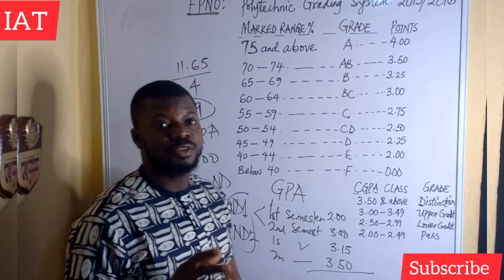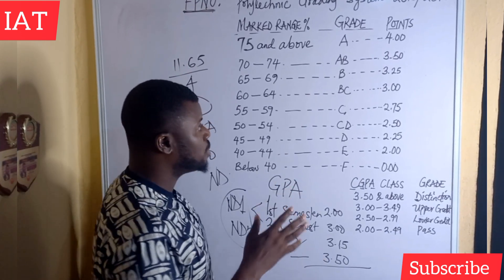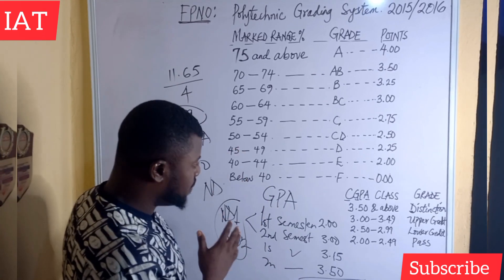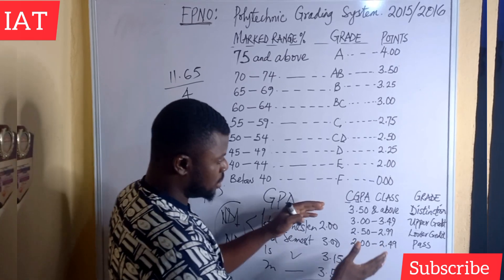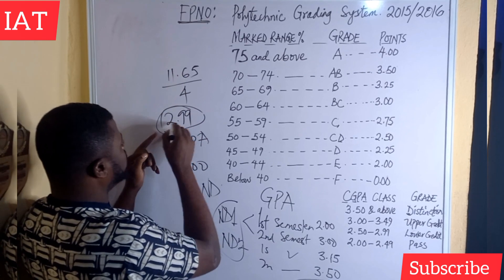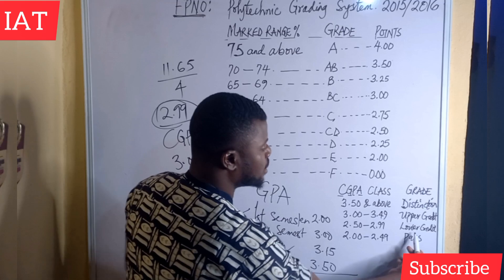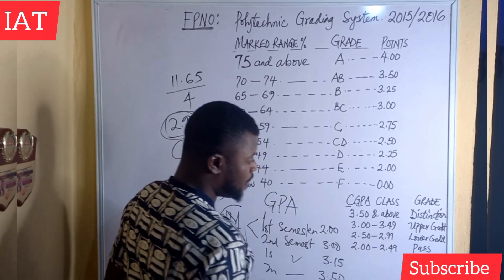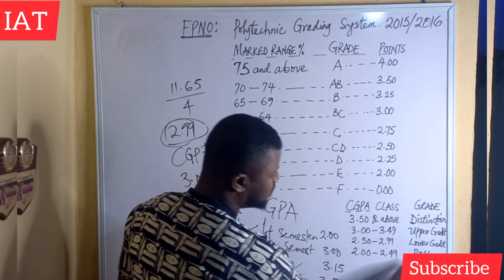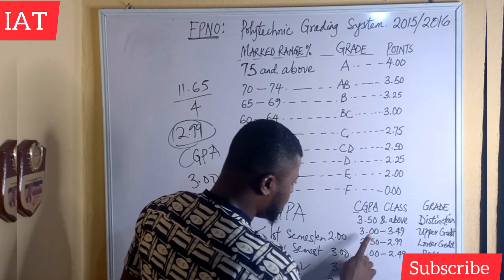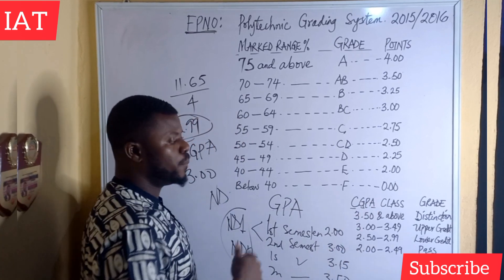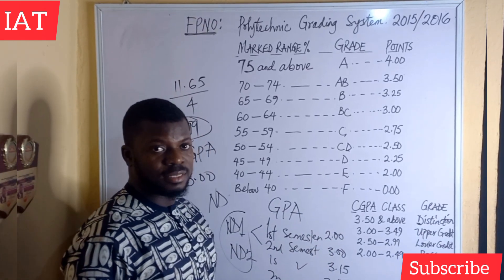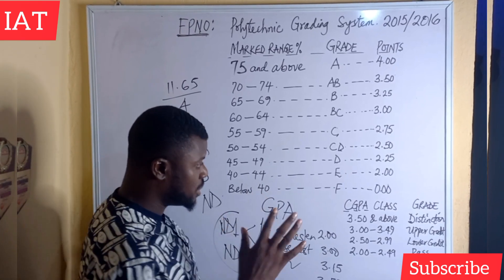If your CGPA is 2.99, check the grade — 2.50 to 2.99 is lower credit, so your result will be written as lower credit. If the total CGPA falls within 2.00 to 2.19, it means you just have a pass. But if it falls within 3.50 and above — say 3.50, 3.70, 3.80, or 4.00 — that is distinction. In the university they call it first class. I'm going to do another video for university students, but this is strictly for polytechnic students.